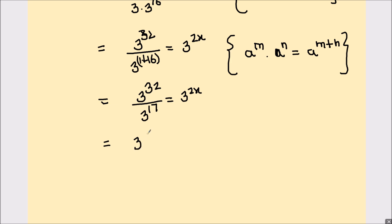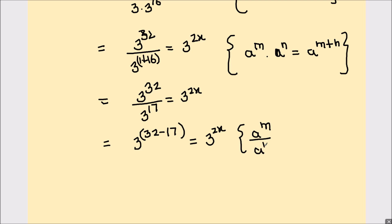This can be written as a single power: 3 raised to power 32 minus 17, because when exponents with the same base are divided, the powers get subtracted. Equals 3 raised to power 2x. Here we have used the law: a raised to power m divided by a raised to power n equals a raised to power m minus n. So that's 32 minus 17, which is 3 raised to power 15, equals 3 raised to power 2x.